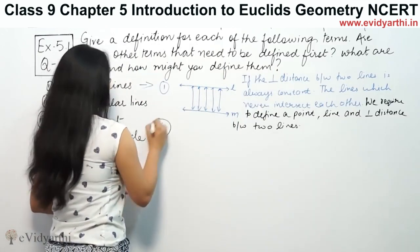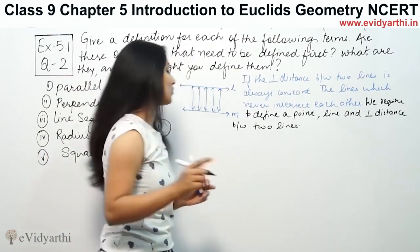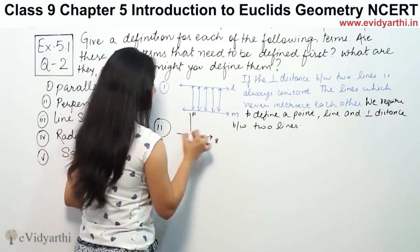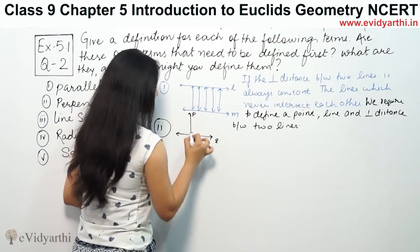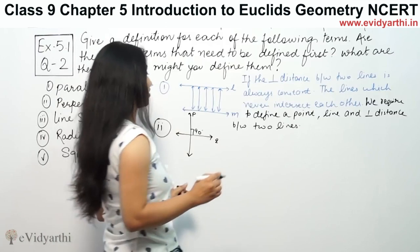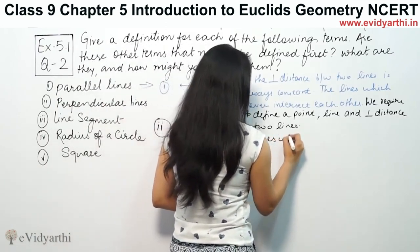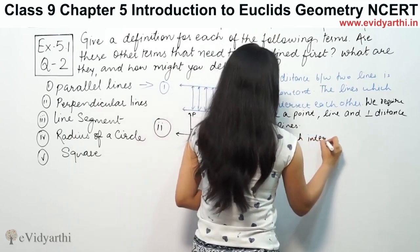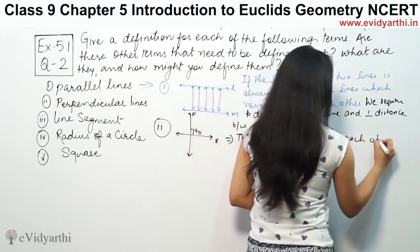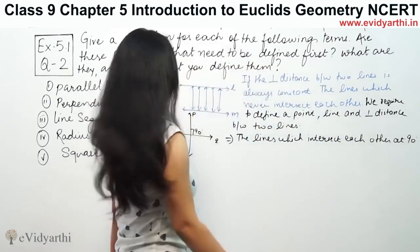The second part is perpendicular lines. Suppose we have lines P and Q. These lines intersect at 90 degrees. So perpendicular lines are lines which intersect each other at 90 degrees. These lines are called perpendicular lines.